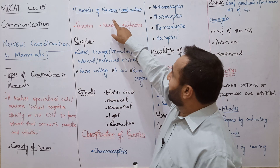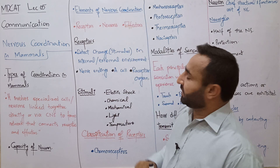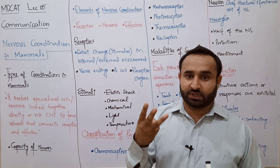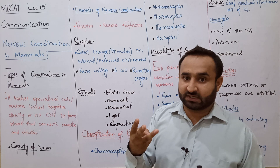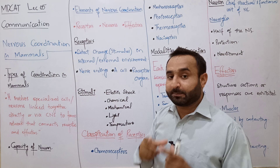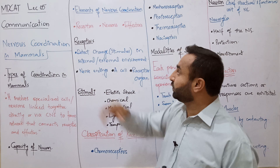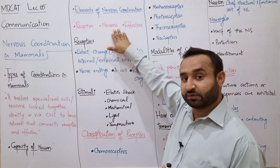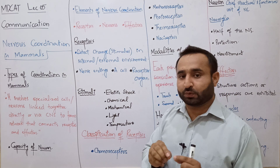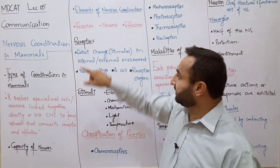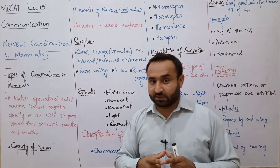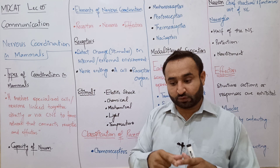Nervous coordination کے تین basic elements ہیں: پہلے receptors، دوسرے neurons، اور تیسرے effectors۔ ہم ان تینوں کو one by one دیکھیں گے۔ سب سے پہلے receptors — لفظ receptor کا مطلب ہے receive کرنے والا، جسے sensor بھی کہتے ہیں۔ یہ environment میں موجود change کو — جسے stimulus کہتے ہیں — detect کرتا ہے۔